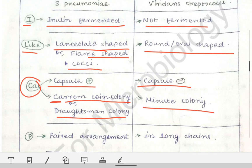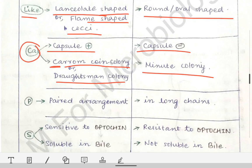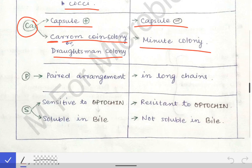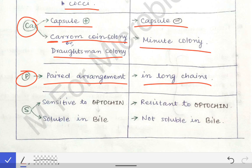Next comes 'P' from CAPS. 'P' stands for pairs — Streptococcus pneumoniae is arranged in pairs, while Viridans streptococci are arranged in long chains. Next comes 'S' — Streptococcus pneumoniae is sensitive to optochin, but Viridans streptococci are resistant to optochin.